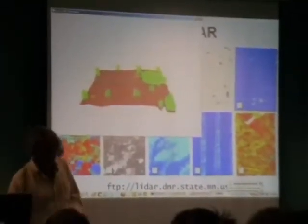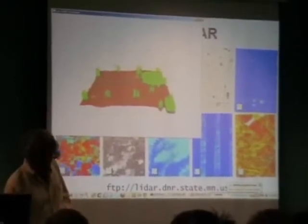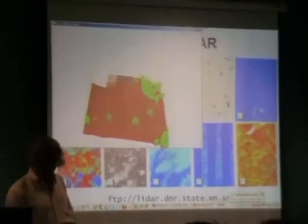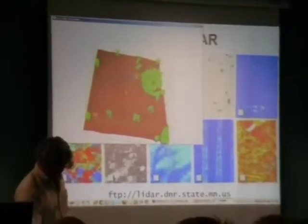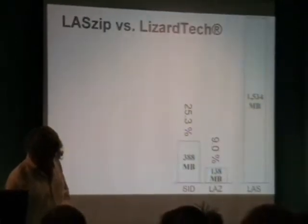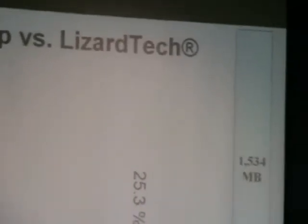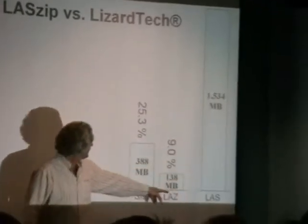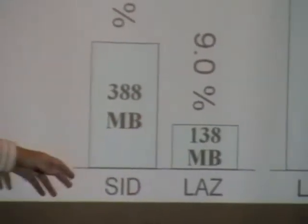When I noticed they had a lot of LAS data online, I contacted the guy in charge — Tim Larsh. I said that's a lot of data on your FTP server, you want to give LAZ a try? He tried it out and said wow, it compresses really nicely — especially when it's in flight line order, as you see here. Looking at a comparison on 12 tiles in an area without too much forest: the original size was 1.5 gigabytes, and it turned into less than 10% of the original. That's a very good case.